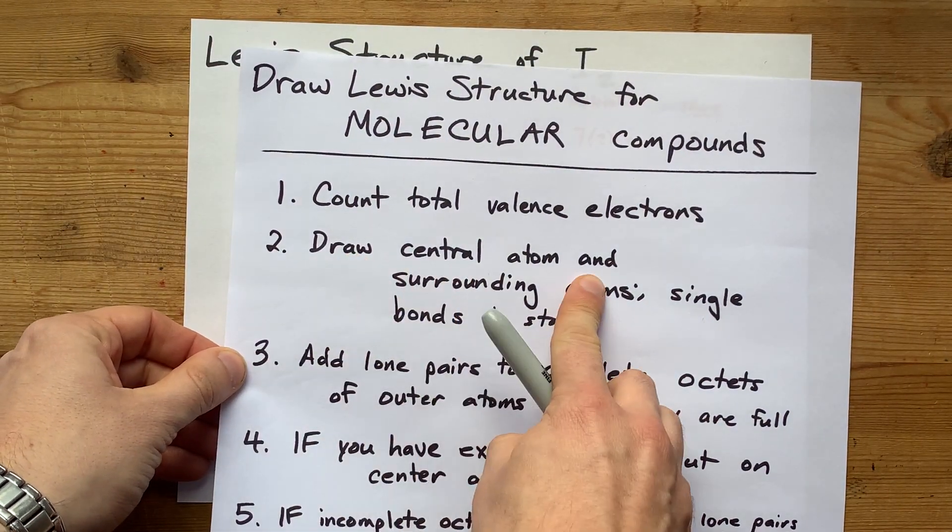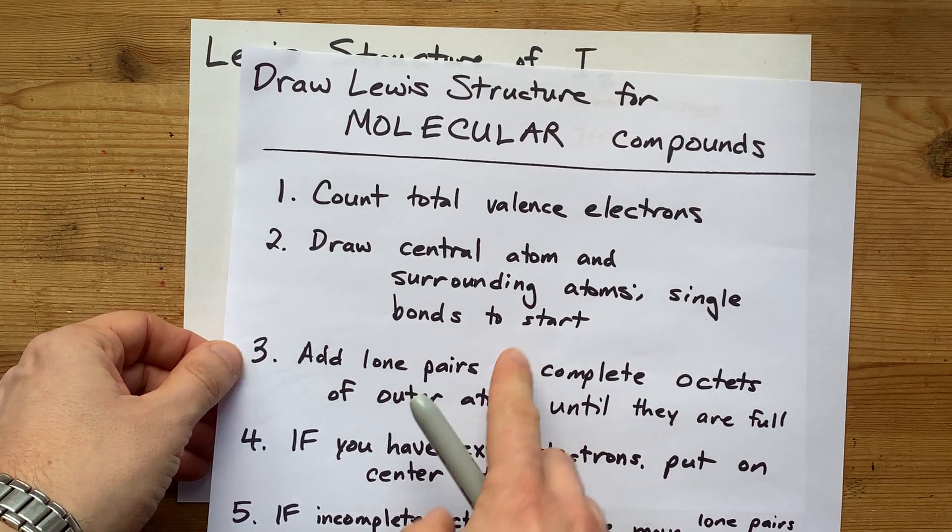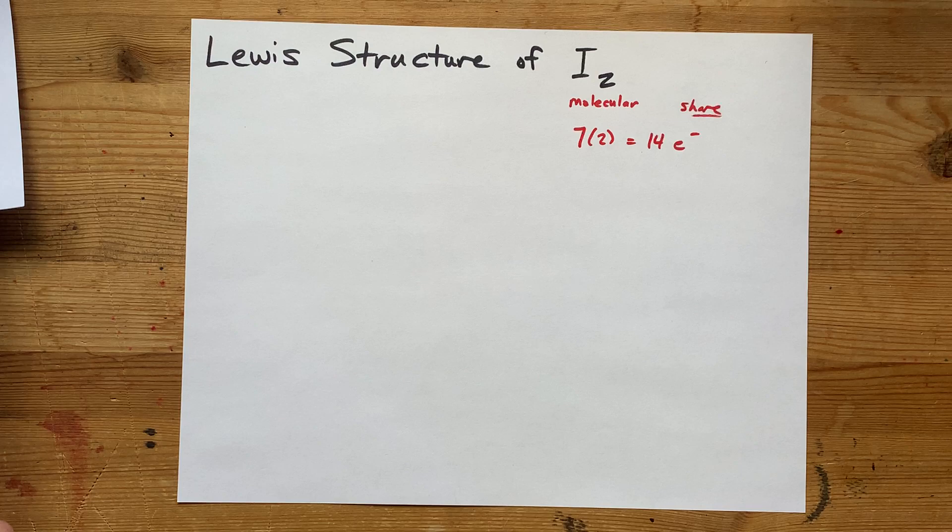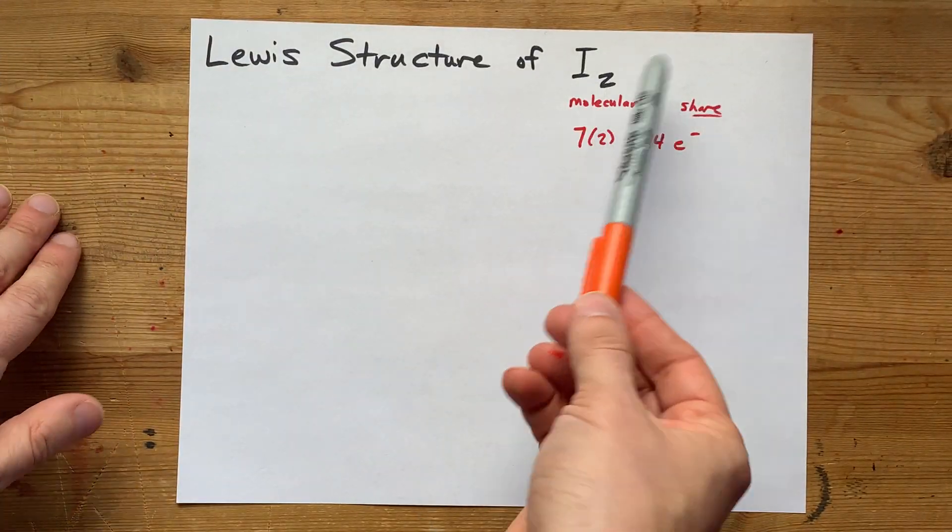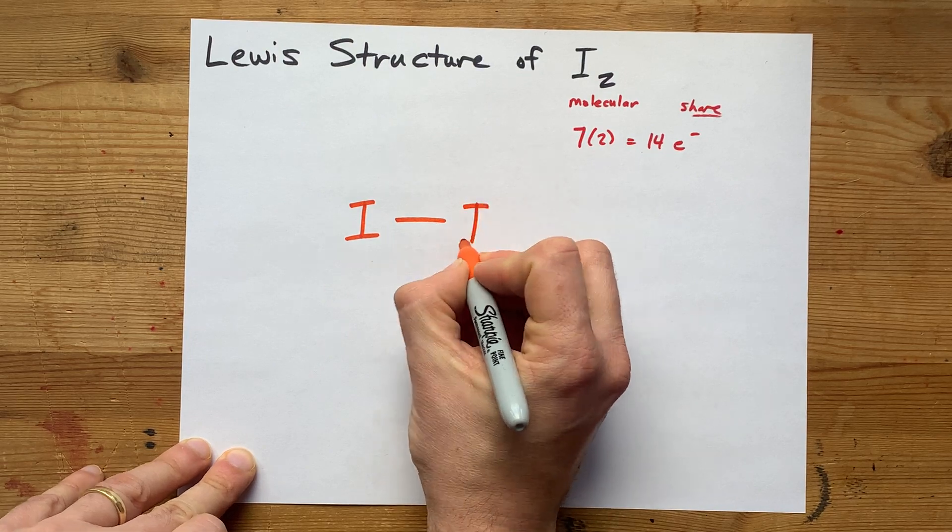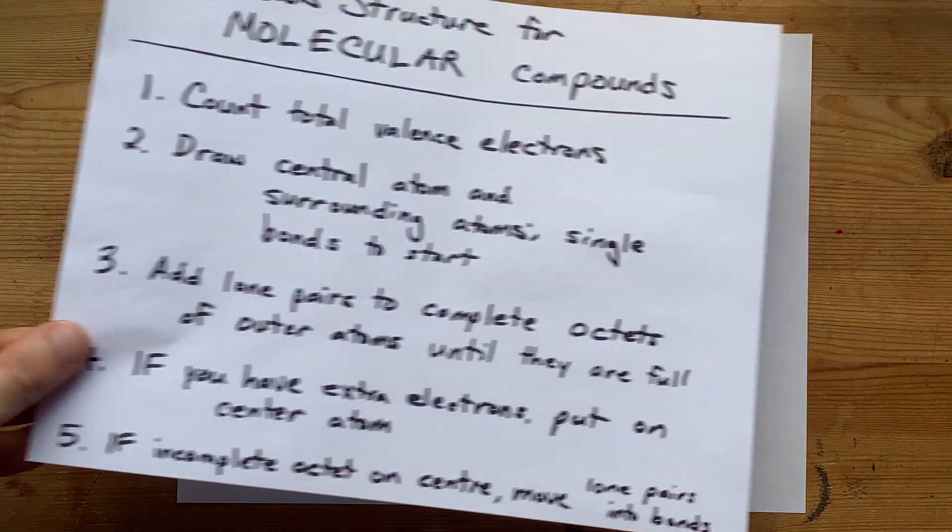Then I draw the central atom and the surrounding atoms, and I connect them with single bonds to start. Now there is no central atom here because there's only two atoms total. So I'm just going to put those two atoms down, single bond them to start. So far, so good.